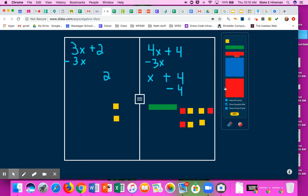So my red blocks are my negatives. And then I know that anytime I have a negative and a positive, those will cancel each other out. So that cancels out there.